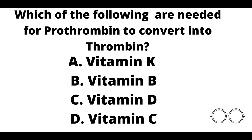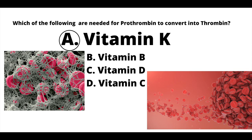Question number five, which of the following are needed for prothrombin to convert into thrombin? A: vitamin K. B: vitamin B. C: vitamin D. Or D: vitamin C? Our answer here is vitamin K. Prothrombin, along with vitamin K, helps convert into thrombin. Thrombin is a clotting factor — it helps to coagulate the blood and create a clot for any kind of wound healing.